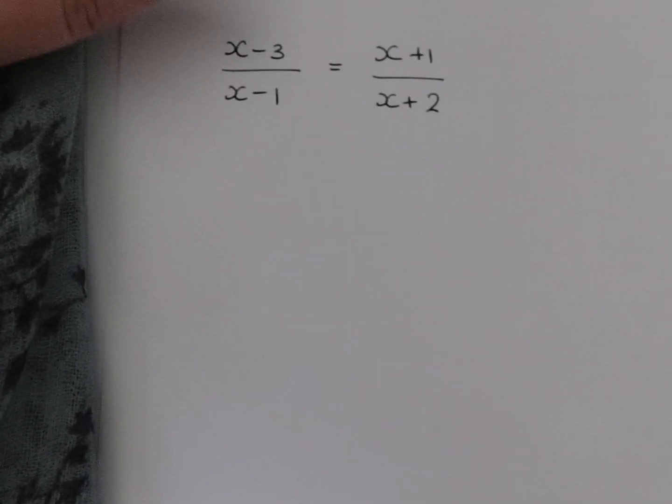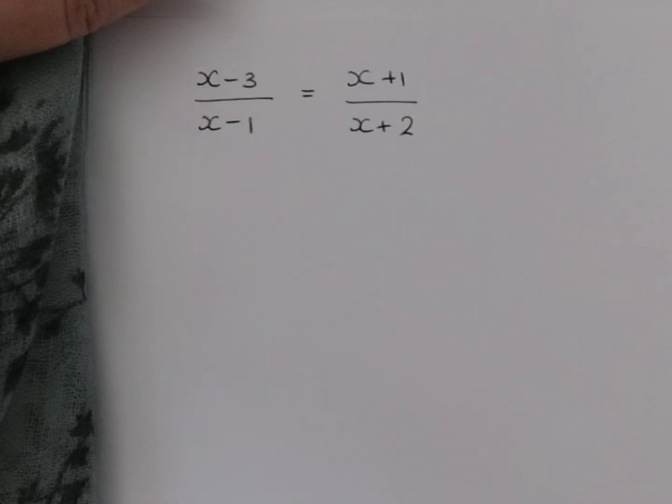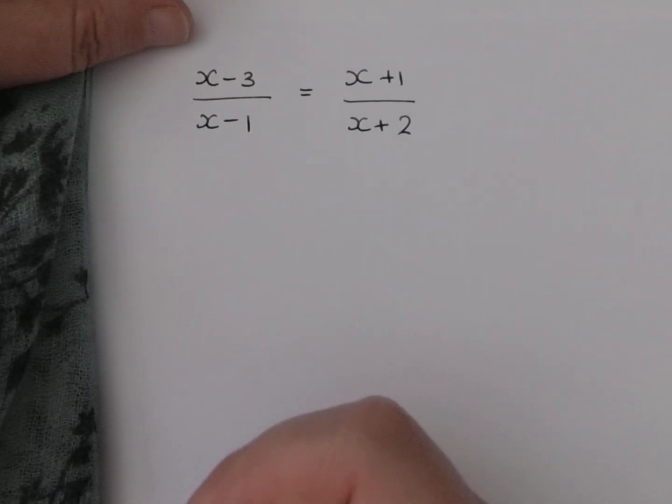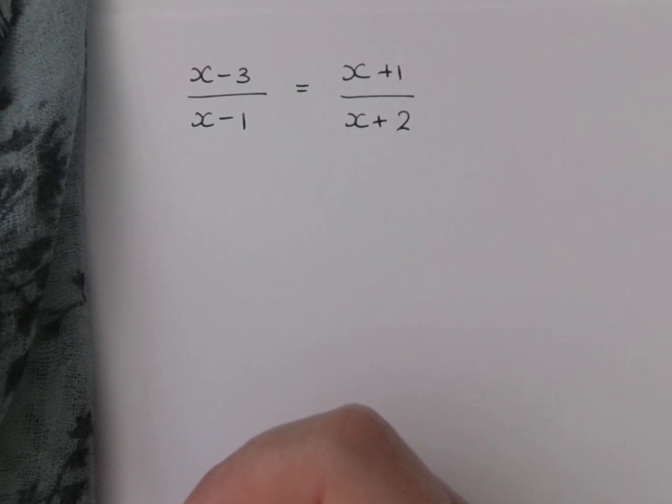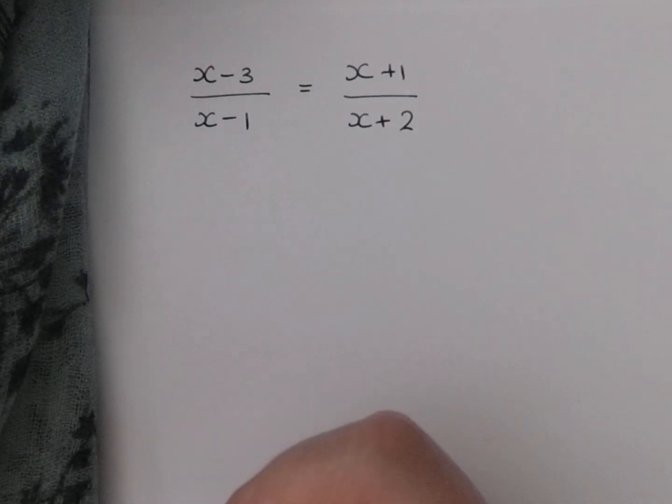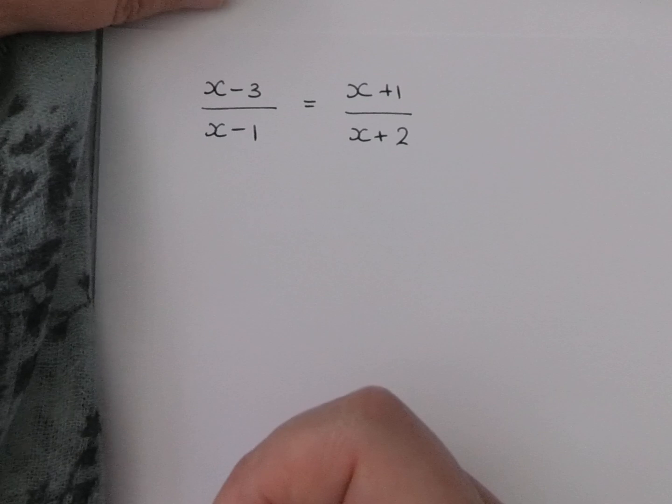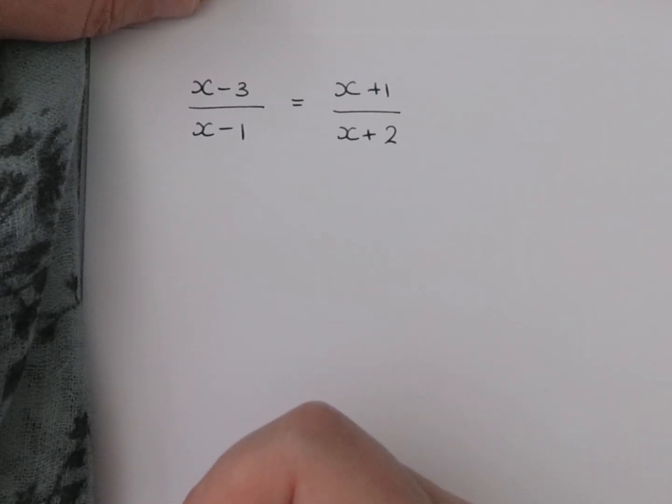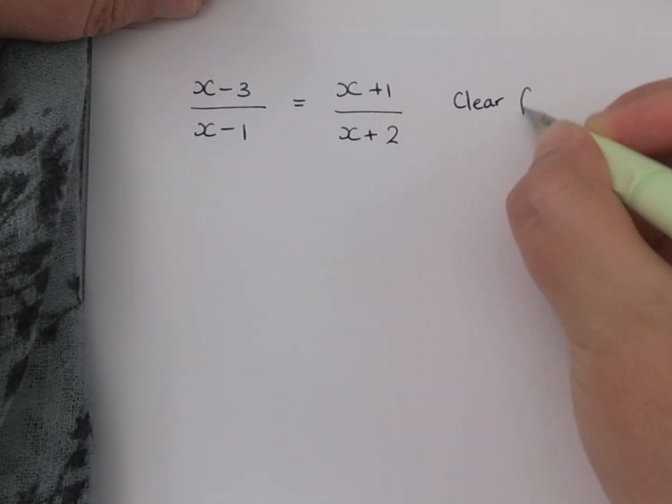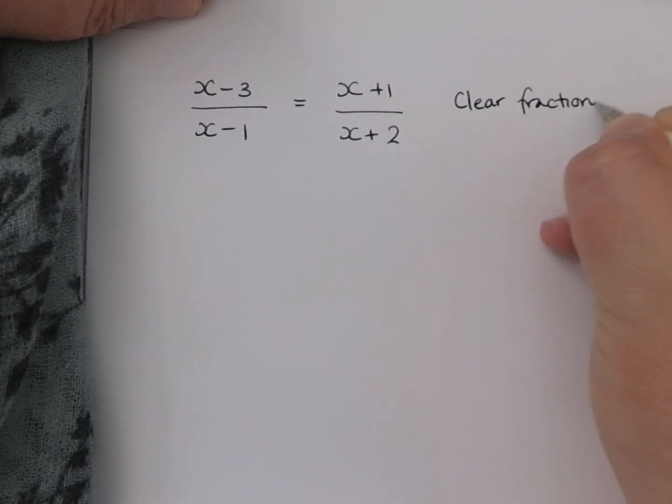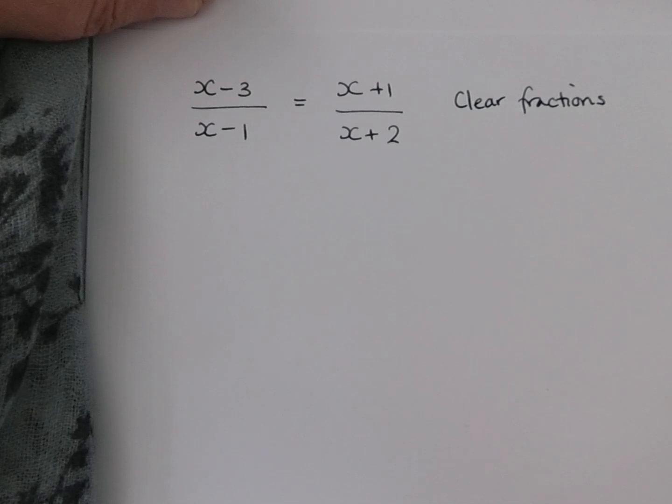My second example ramps it up a little bit. This time, still only got two fractions, but the denominators now have variables in. Again, we want to solve for x, so we want a value or values for x at the end. And again, our first step is to clear the fractions.